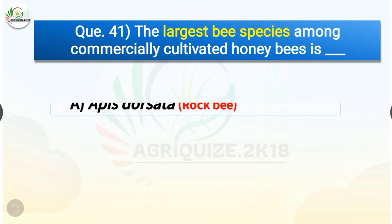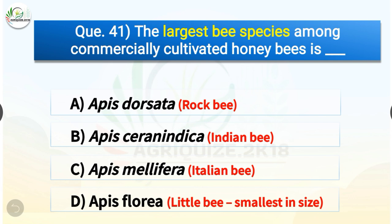Question number forty-one: the largest bee species among commercially cultivated honey bees is — options are Apis dorsata, Apis cerana indica, Apis mellifera, or Apis florea. The correct answer is option A, Apis dorsata. Apis dorsata is also known as the rock bee. Apis cerana indica is known as the Indian bee. Apis mellifera is called the Italian bee, and Apis florea is the little bee, which is the smallest in size.